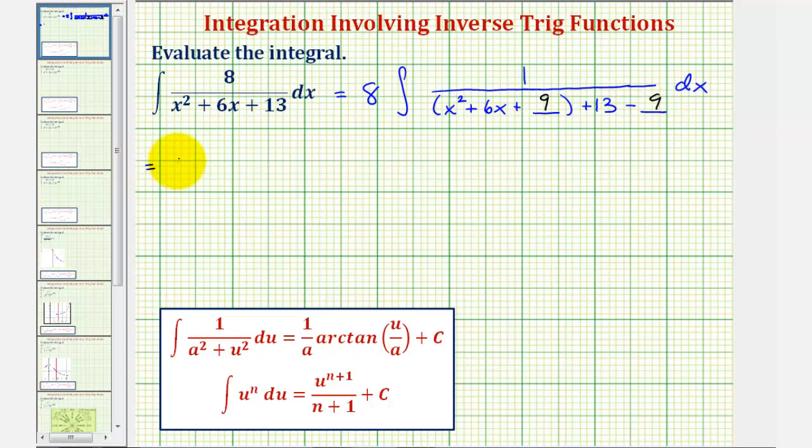So now we have eight times the integral of one divided by, let's go ahead and factor our trinomial. We have x and x. The factors of nine that add to six are positive three and positive three. So we'd have plus three plus three, or the quantity x plus three squared. Notice here we have 13 minus nine, which equals four.